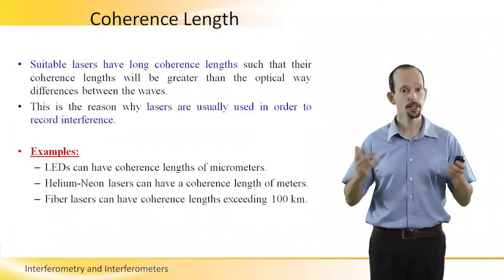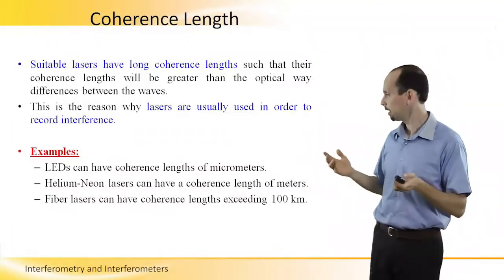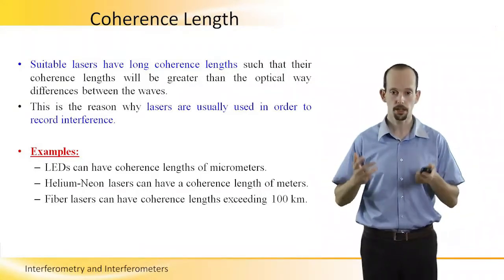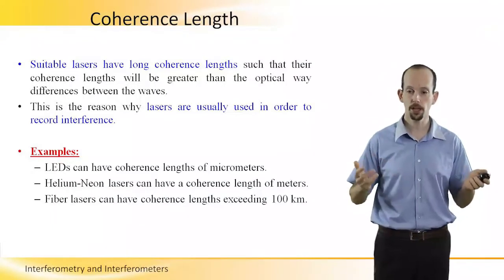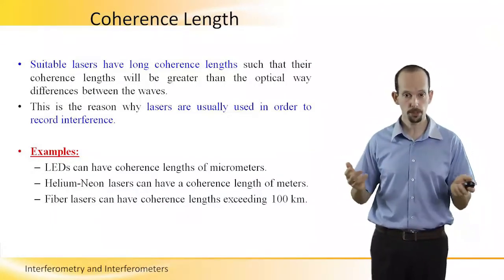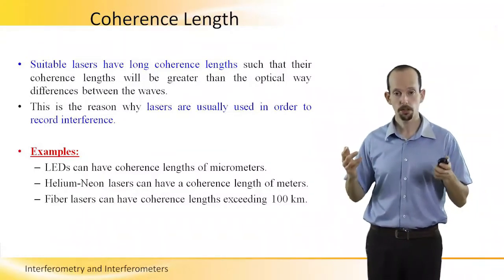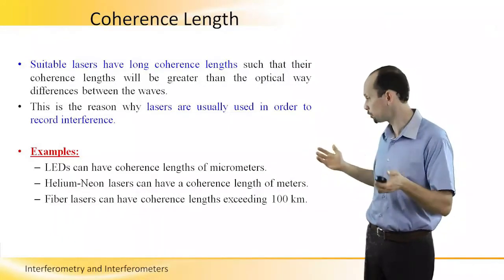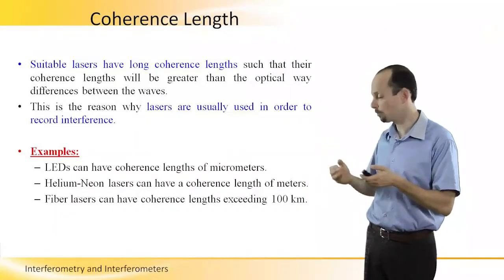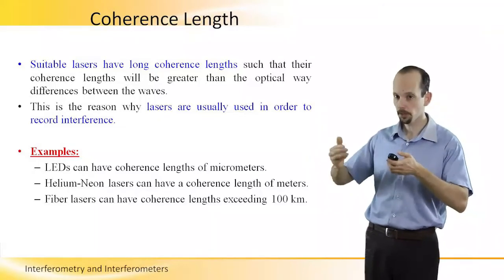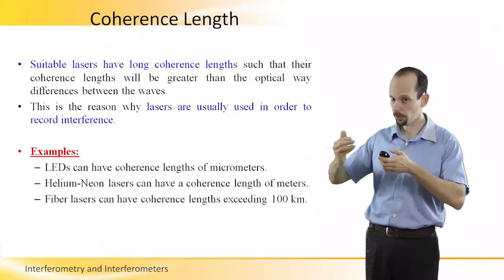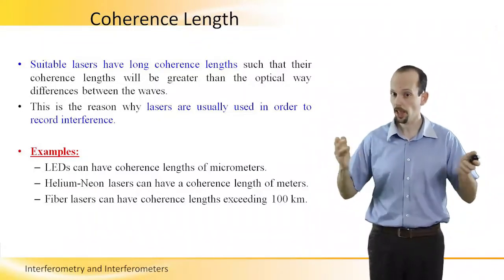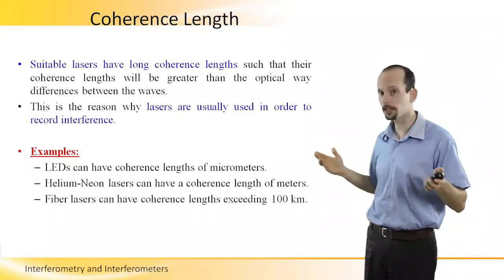As examples: light-emitting diodes (LEDs) can have coherence lengths of several micrometers. A helium-neon laser — a certain gas laser — has a coherence length of meters. This is why the helium-neon laser is used in teaching labs to create interference: it is relatively cheap and it is very easy to create interference, because you can have meters of path difference between the waves and still achieve interference. Certain fiber lasers can have coherence lengths exceeding 100 kilometers.